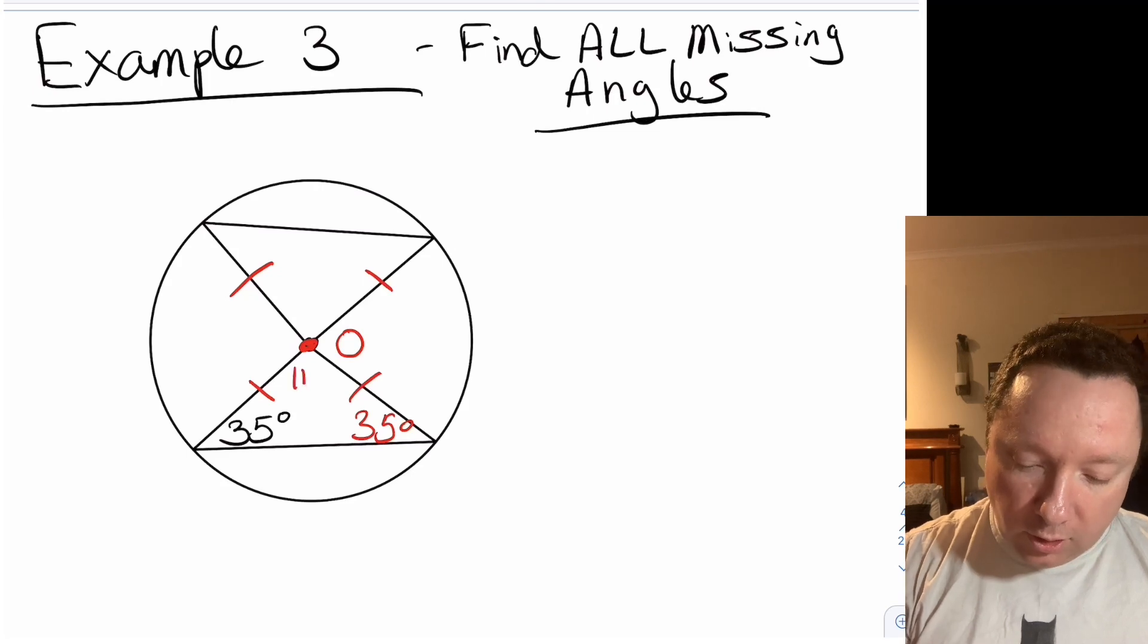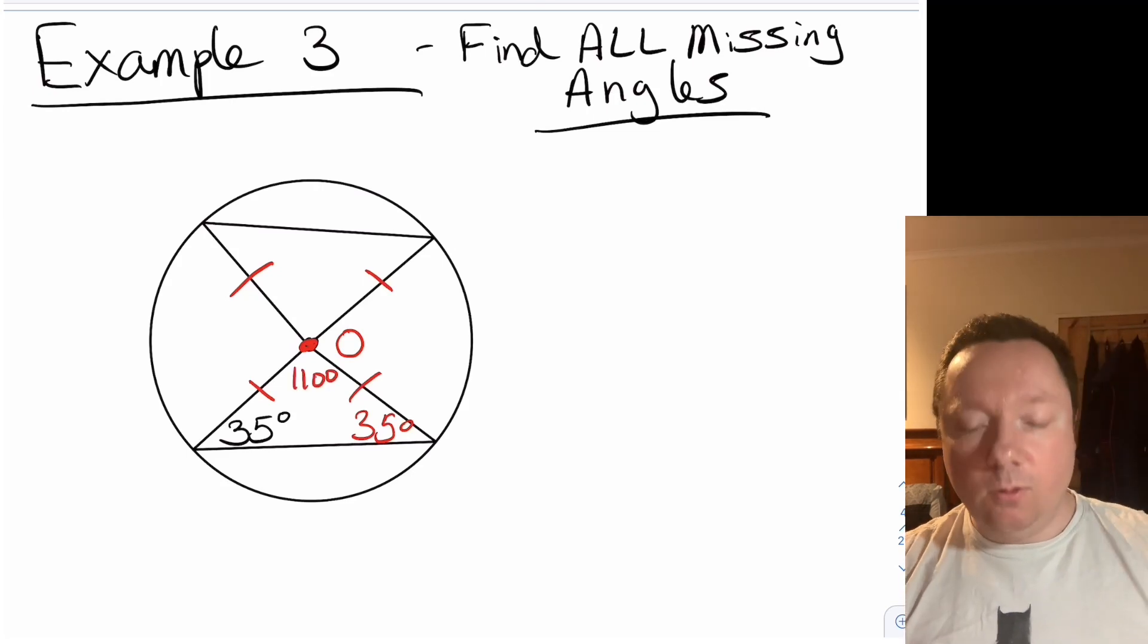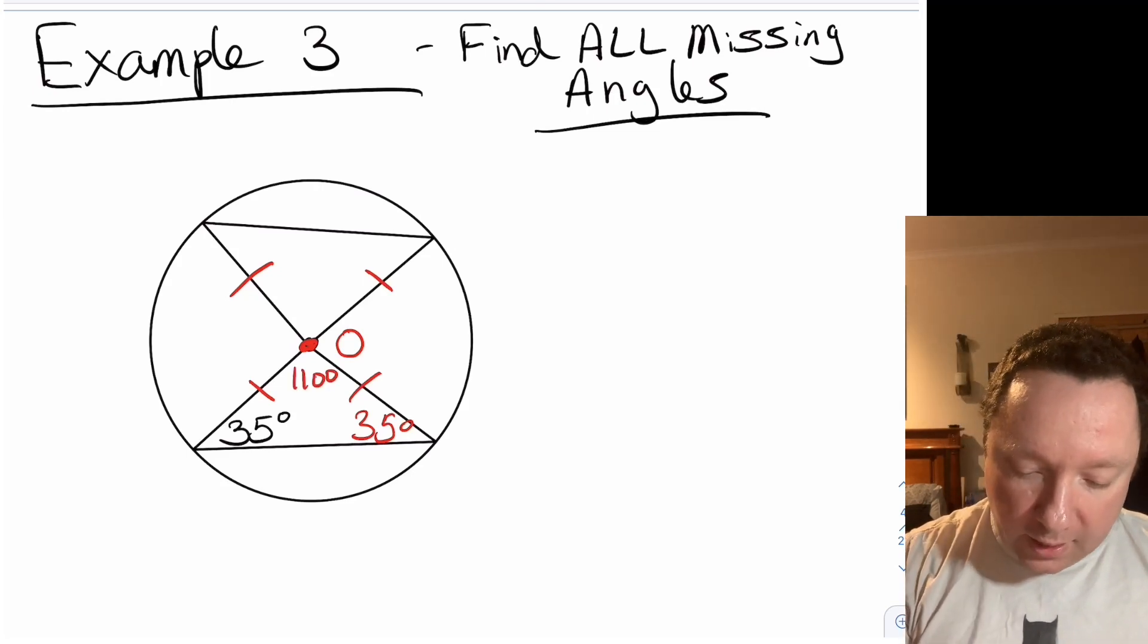By doing 110, because angles in a triangle add up to 180. Vertically opposite angles are the same size, so that's 110. So we've got 35 and we've got 35 up here, a little bit of symmetry.